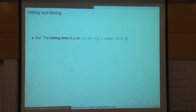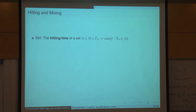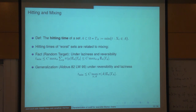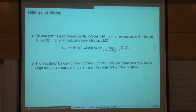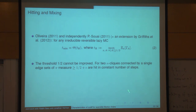This example illustrates one of the enemies in trying to establish that the product condition implies cutoff. What goes wrong here is that vertex Y's neighborhood is a very large set, and we can hit this set in two ways that take very different times. This suggests a connection between cutoff and concentration of hitting times, and this connects to Perla's talk about mixing time and hitting time at the order of a constant.